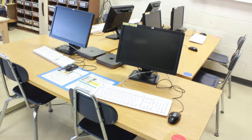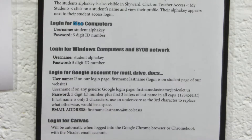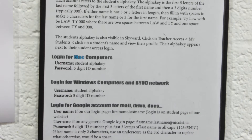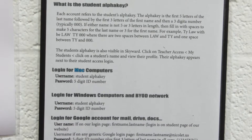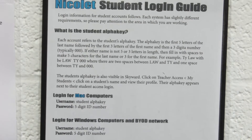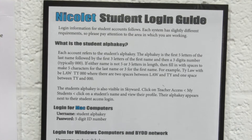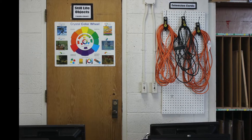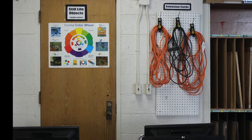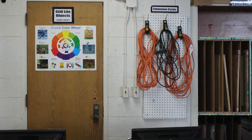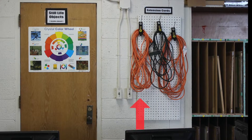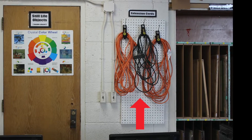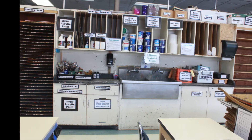Moving clockwise to the right, you will again see the bank of computers. On the wall between the whiteboards, there are some instructions for how to log into desktop computers, as those directions are different from logging into your Chromebook. Immediately behind the computers is a closet that houses most of the still life objects, and you can see some extension cords neatly wrapped on the wall to the right.